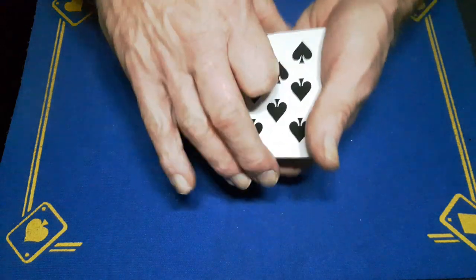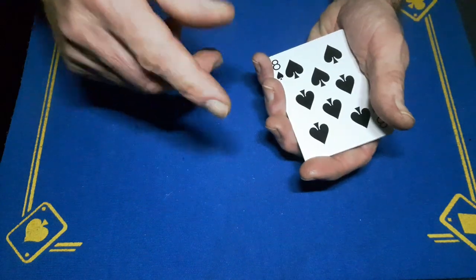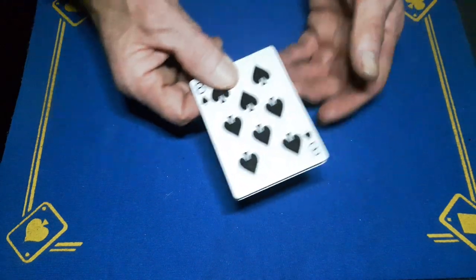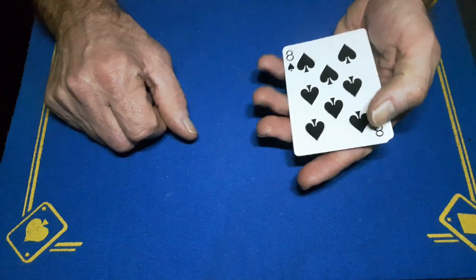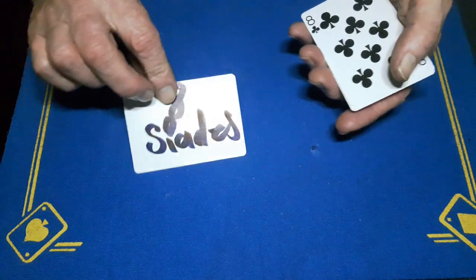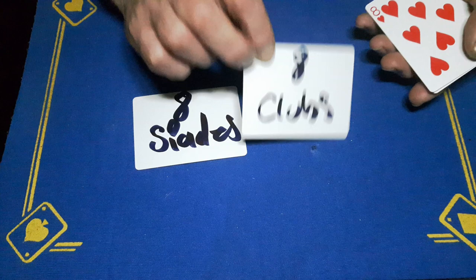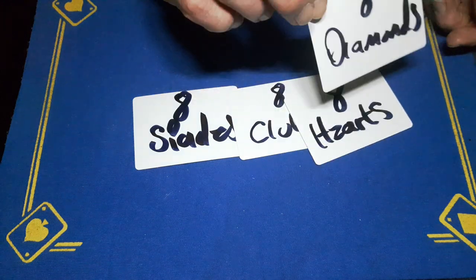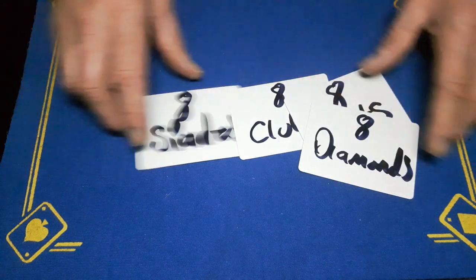You can now say to your spectator, did you see the markings? Well, I did say they were quite hard to see, but I'm not quite sure why you couldn't see them because there's the eight of spades, there's the eight of clubs, there's the eight of hearts, and there's the eight of diamonds, clear as day.